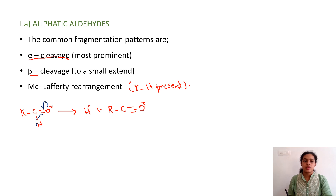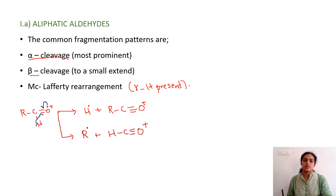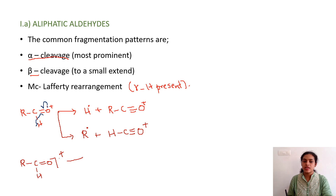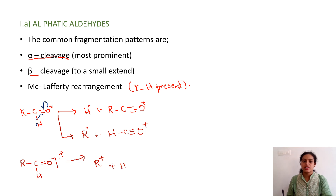In the second mode of fragmentation, R dot can be expelled, and the resultant species is H-C≡O⁺. In the third type of alpha cleavage, considering the molecule R-CHO with dot and plus, it can cleave such that one fragment gets a positive charge and the other gets a radical. So there could be R⁺, and the remaining one will be a radical H-C-O dot. These are the three ways of alpha cleavage.